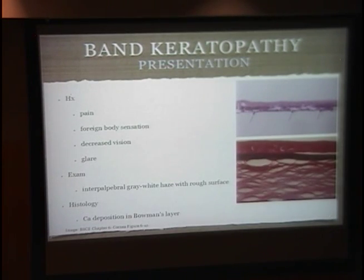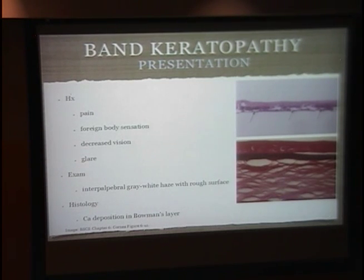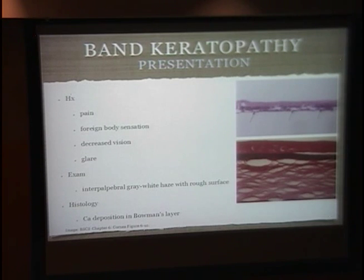The calcium precipitates can be seen in these images in Bowman's layer and the anterior stroma, initially as granules, then coalesce and can lead to fragmentation of Bowman's layer and disruption of the epithelium. Patients often present with eye pain, foreign body sensation, decreased vision, and glare from the salt precipitates. On exam, the characteristic interpalpebral gray-white haze with a rough surface is seen.